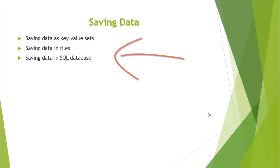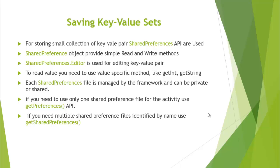In this module, we will focus on saving data as key-value sets. To store a small collection of key-value pairs, Android provides the SharedPreferences API. SharedPreferences objects provide simple read and write methods that you can use to read from a file or to write into a file. To write into a file, you need to get an editor object using a SharedPreference object. And to read a value, you need a specific method like getInt or getString using your SharedPreference object.